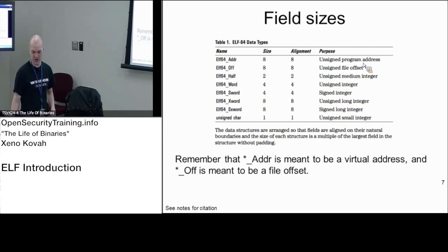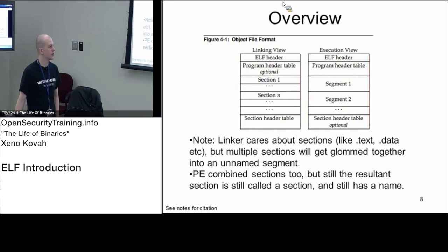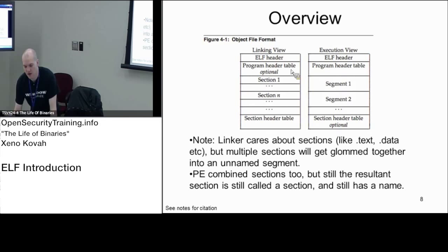There are two views of an ELF file: a linking view and an execution view. The linking view is what you'll have in .o files — the linker wants section information. An executable will typically have the execution view with program header information. The interesting thing is that an executable will often have both the program header and the section header, so you have these two views merged together — information about segments and information about sections.